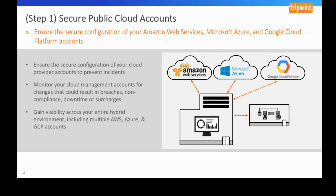Not only does Tripwire Enterprise allow you to see how various servers and virtual machines are set up on premises, but it also allows you to do the same in each of these public cloud environments. Uniquely, Tripwire brings all of that data into one centralized location, which makes it much easier to secure your private cloud, public cloud, and on-premises servers.